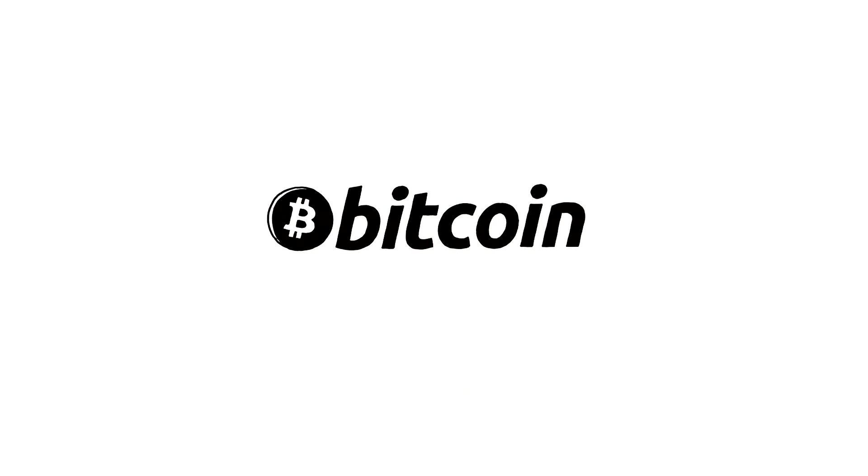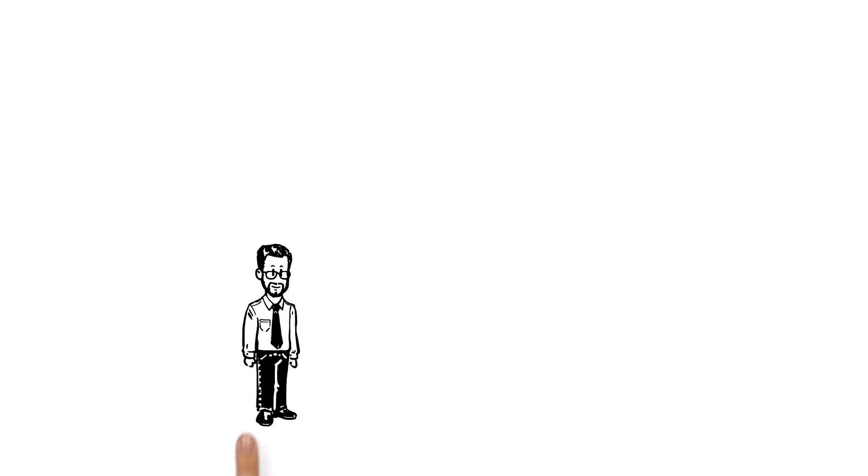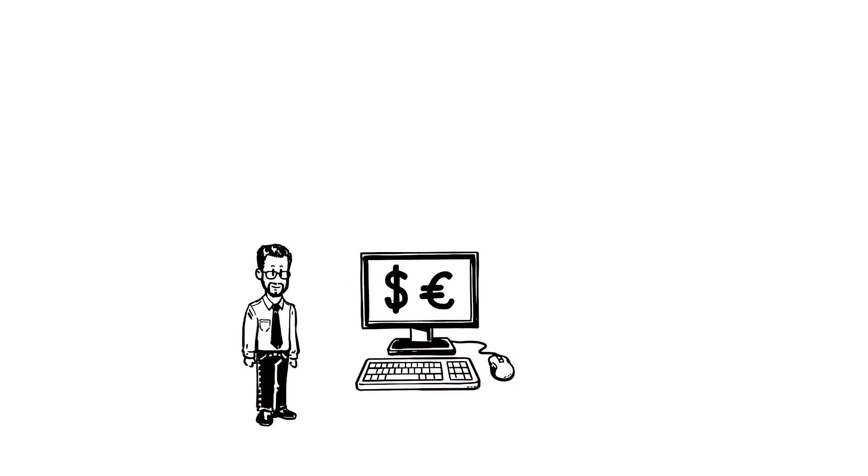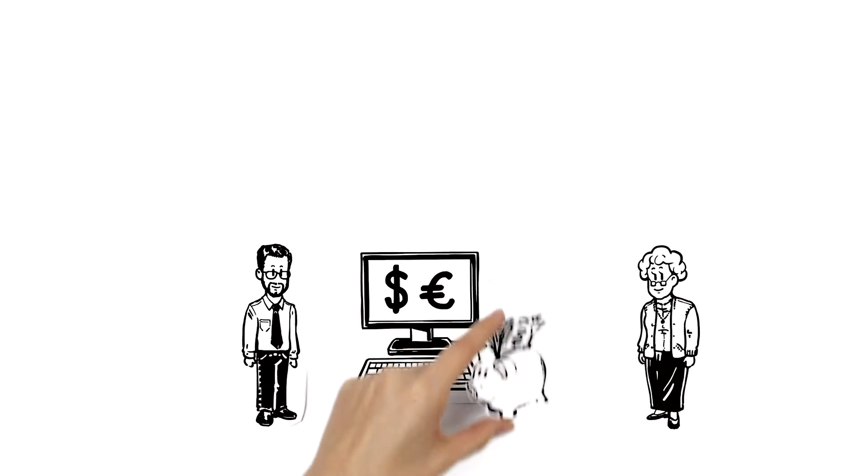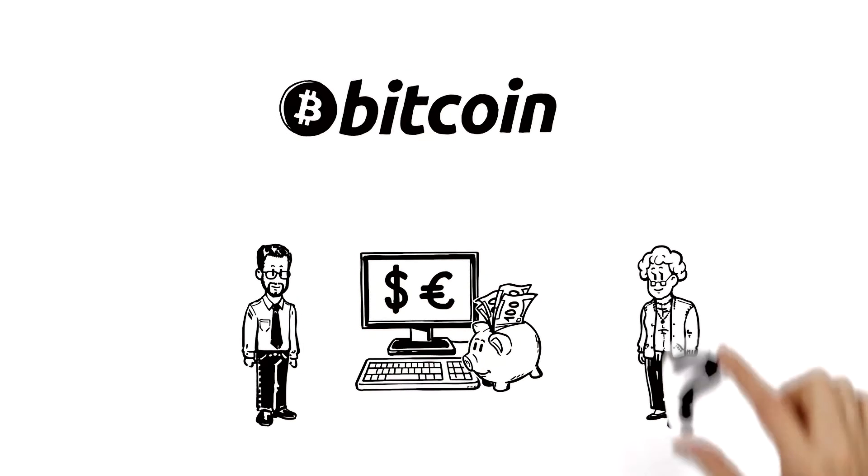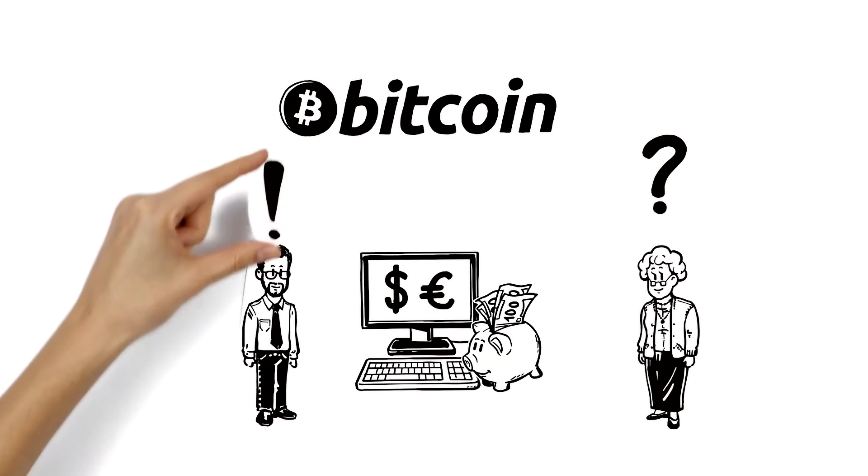Bitcoin. Explain simply. This is Matthew. He works with online payment, and his grandmother Margaret has just begun banking online. She's heard of Bitcoin, but doesn't know what it is. Matthew can explain.